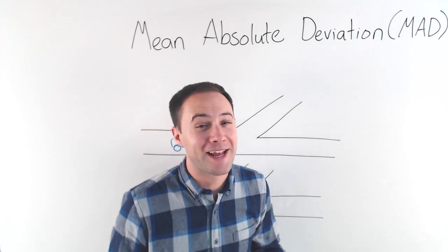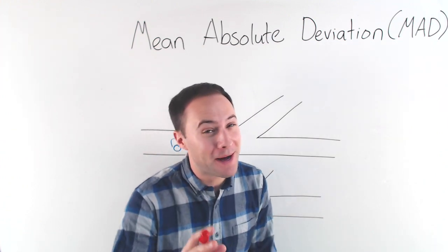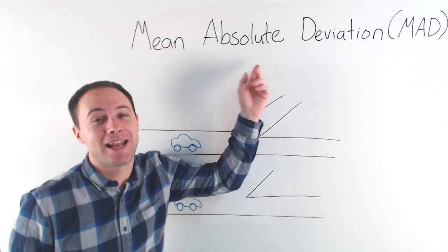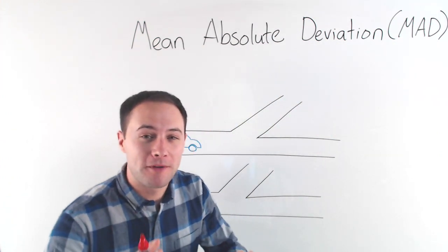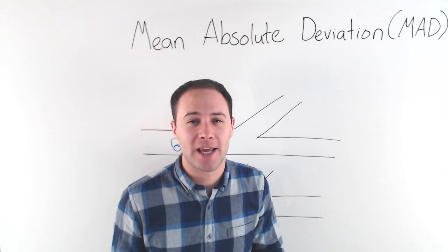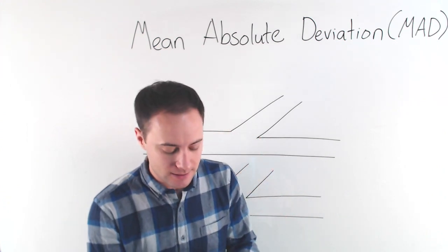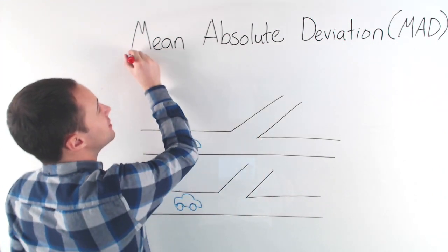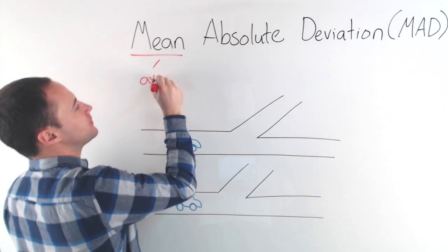Today we're going a bit mad. And by mad, of course, I mean the mean absolute deviation. So before we get to an example, let's first talk about what that is. Mean — we know what that is, right? That's just an average.